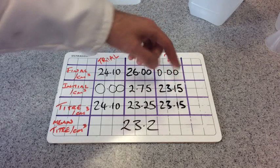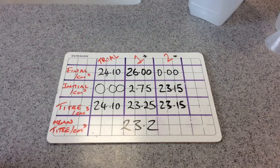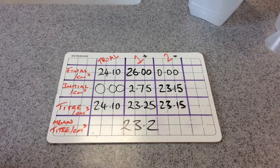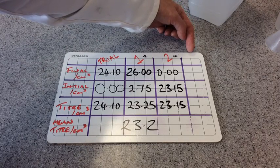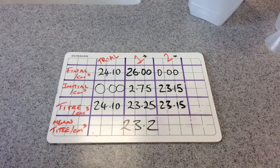So we've got a mean titra of 23.2 cm³. If this titration result had been too different, so if it had been, say, 0.2 cm³ away or 0.3 cm³, you would simply just do another titration and hopefully you would get a better result.